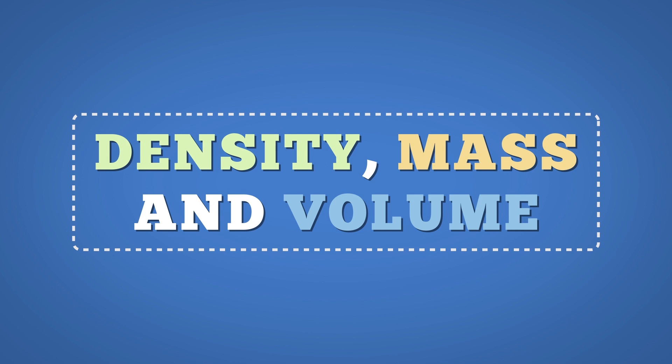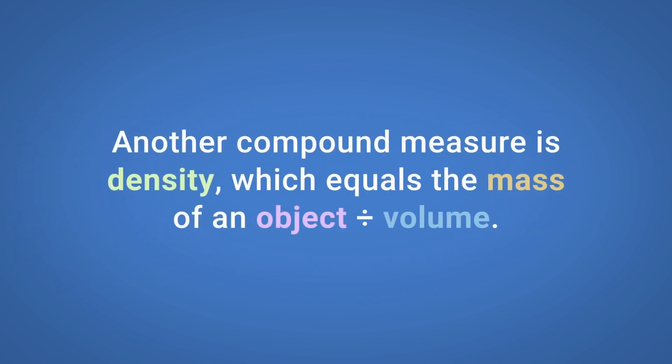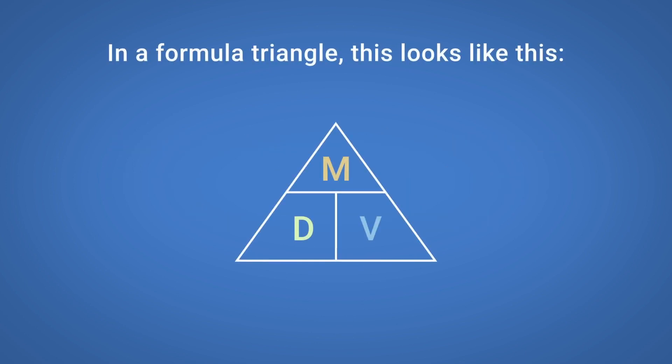Density, Mass and Volume. Another compound measure is density, which equals the mass of an object divided by the volume. In a formula triangle, this looks like this. Simply cover up the part you want to calculate and the triangle will indicate which formula you need to use.